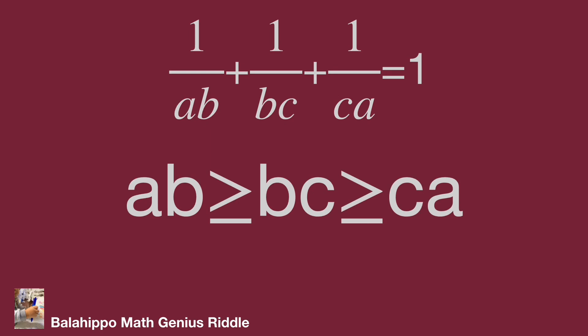From AB larger or equal to BC, we get A larger or equal to C. From BC larger or equal to CA, we get B larger or equal to A. And from AB larger or equal to CA, we get B larger or equal to C. Combine these three results, we have the condition: B larger or equal to A larger or equal to C.